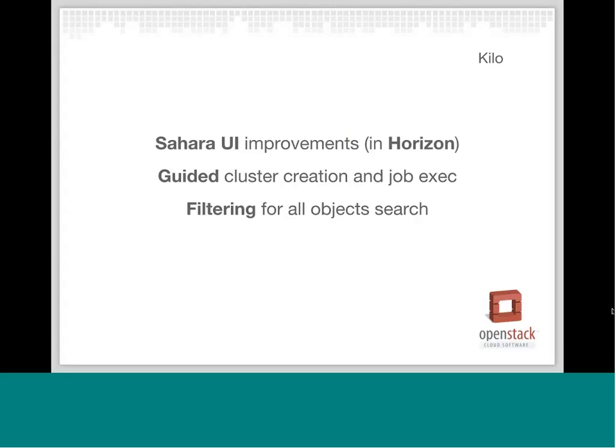On the Sahara UI side, there were a bunch of improvements and bug fixes in Horizon. We added guided cluster creation and job execution workflows, so users can go through a guide on the UI to create all the configuration needed for provisioning a cluster, including node group templates and cluster templates. The same can be done in a guided way for job executions. All object pages in Horizon now contain filtering for search, so it's easy to filter objects by cluster or job type, for example.